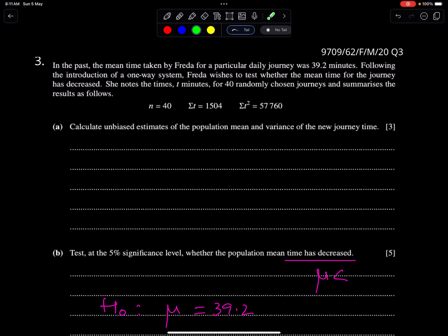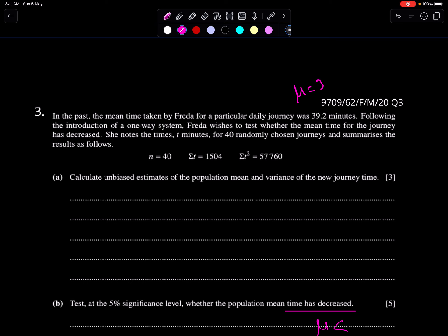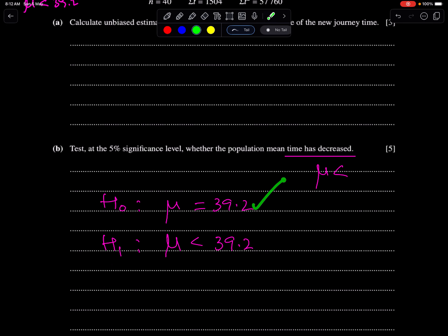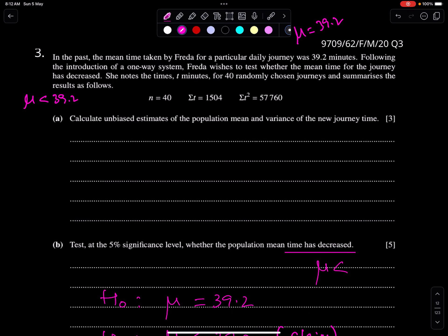Another example of testing of hypothesis from March 20, paper 62, question 3. In the past, the mean time taken by Farida for a particular daily journey was 39.2 - this is mu, population mean. Following the introduction of a one-way system, Farida wishes to test whether the mean time for the journey has decreased. She wants to test whether mu has decreased. So this is 39.2 and mu less than 39.2, and this is the claim. These types of questions come in testing of hypothesis.